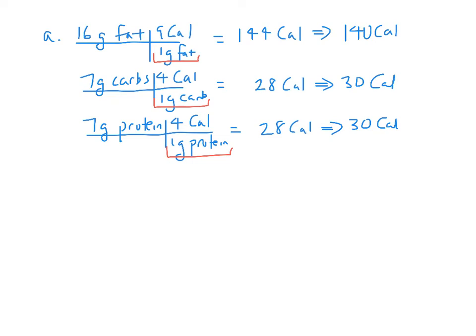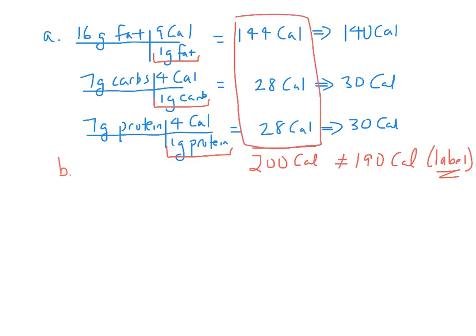For part B, we want to figure out whether the company reported the total number of calories correctly using significant figures. When applying significant figures rules and calculations, do not round until you get to your final answer. So that's why I used these unrounded numbers here to calculate the 200 calories.